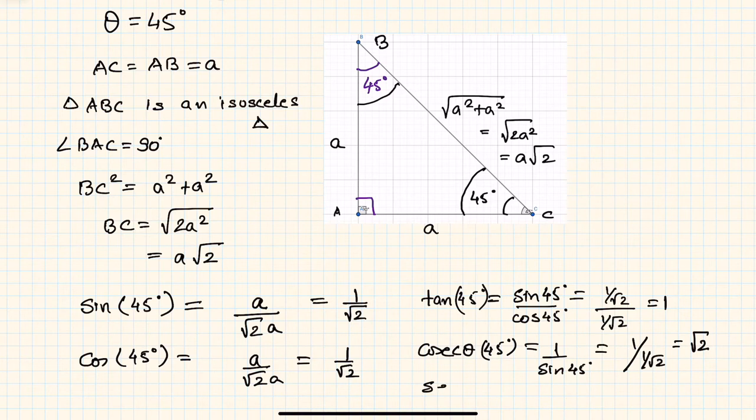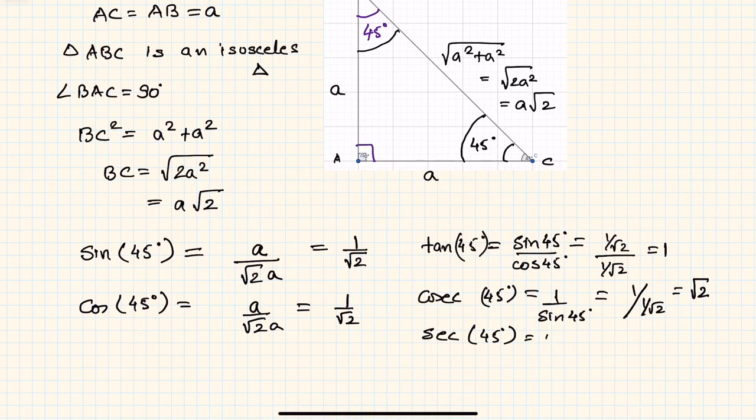Similarly, secant 45 degrees is 1 upon cosine 45 degrees, which is √2. Cotangent 45 is 1 upon tan 45, or base by perpendicular, which equals 1. So remember: sine 45° = 1/√2, cosine 45° = 1/√2, tan 45° = 1, cosecant 45° = √2.